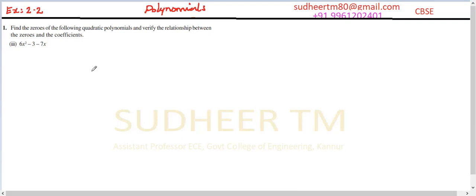Question number one, Exercise 2.2, third question: find the zeros of the following quadratic polynomials and verify the relation between the zeros and the coefficients. Our given polynomial is P(x) equal to 6x squared minus 7x minus 3.